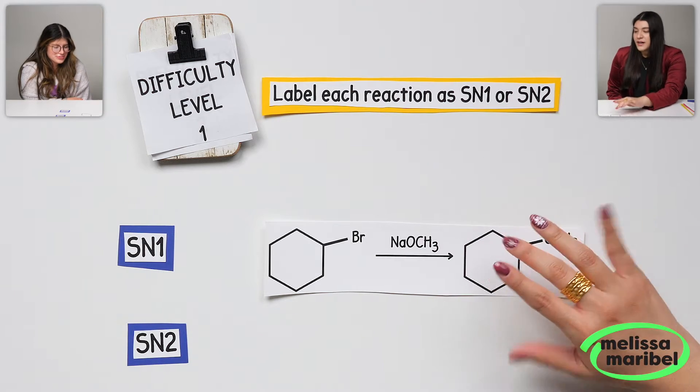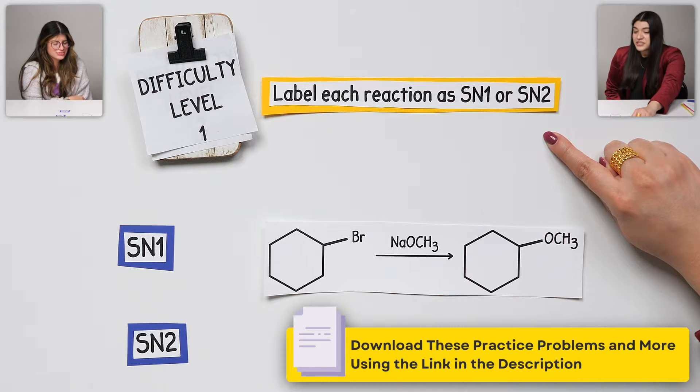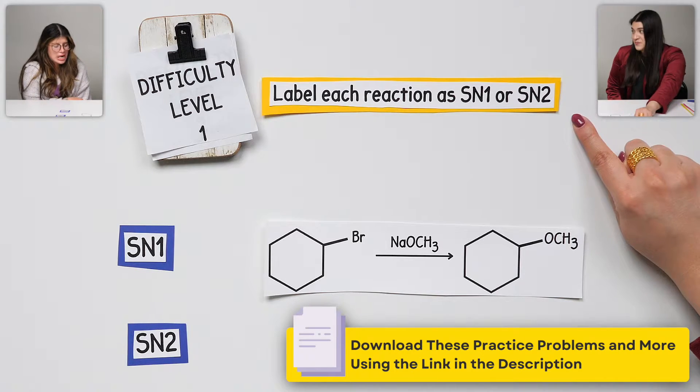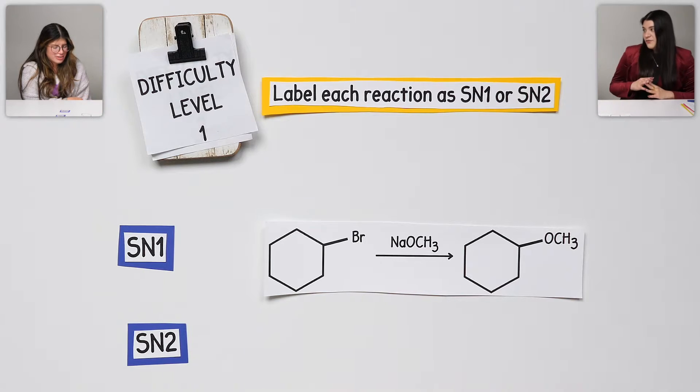We're going to keep it pretty simple where difficulty level one, all we're focusing on is labeling each reaction as SN1 or SN2. If we were looking at this one, what do you think it would be? How can we tell from this?